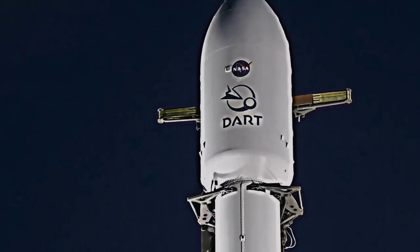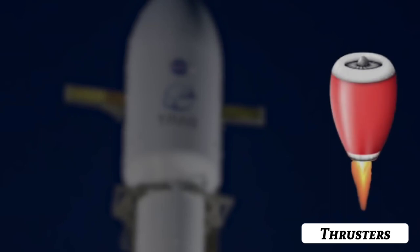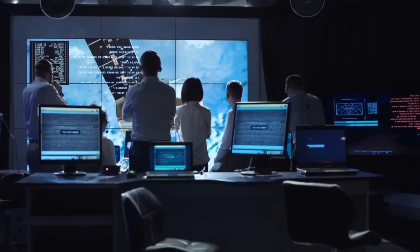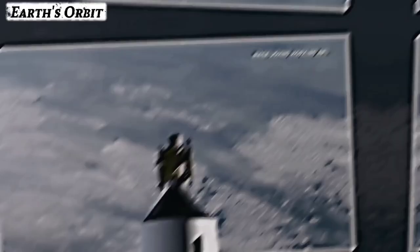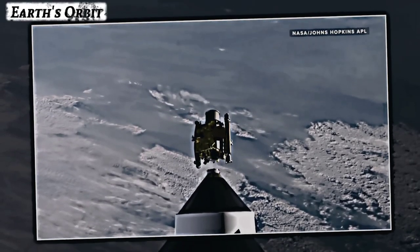Similar to other space probes, DART was equipped with thrusters, a camera system, and a radio link to send live images back to NASA. After a few hours, DART reached Earth's orbit.